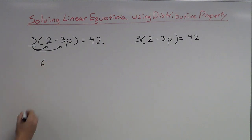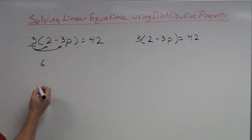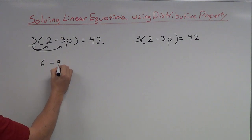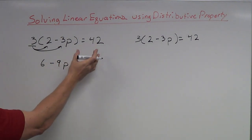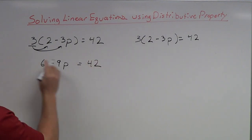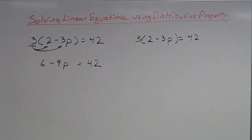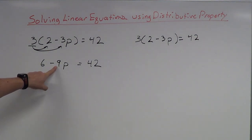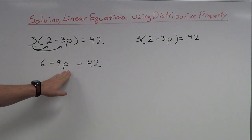3 times 2 is 6, and 3 times negative 3p is negative 9p. This 42 just drops down — when we distribute the 3 it's only inside the parentheses, we don't distribute it to the 42. Now our numbers have changed a little bit but I still want to get rid of this negative 9 and this 6 to get the variable by itself.